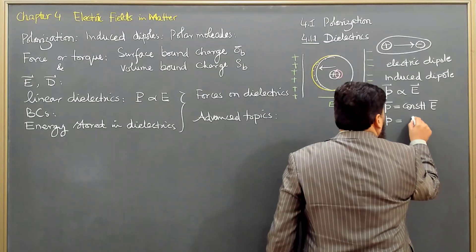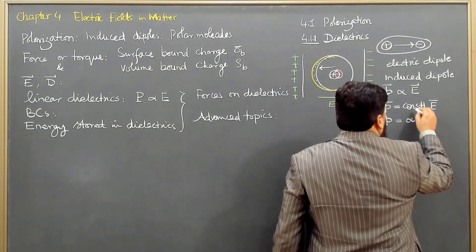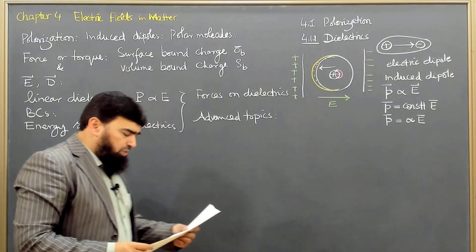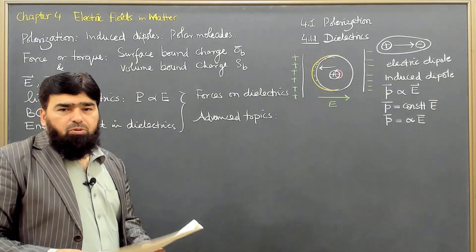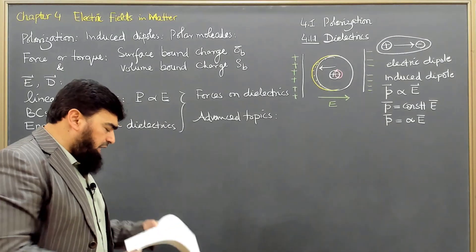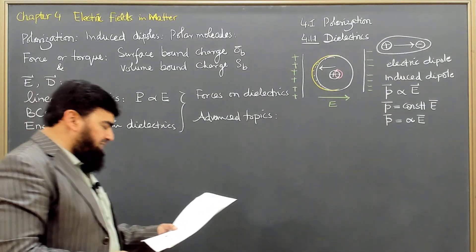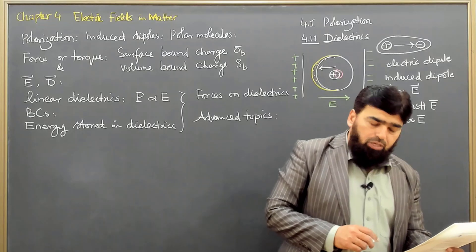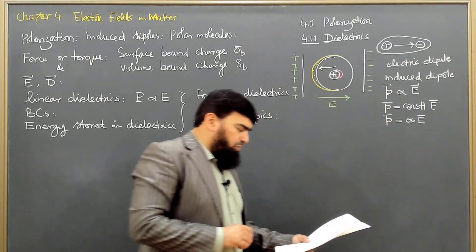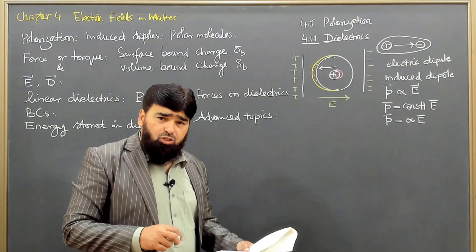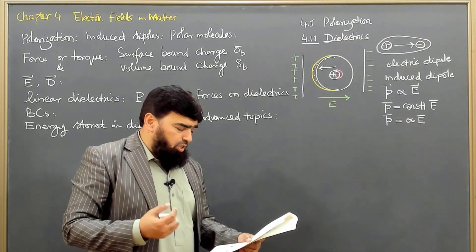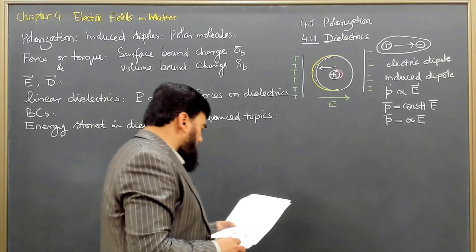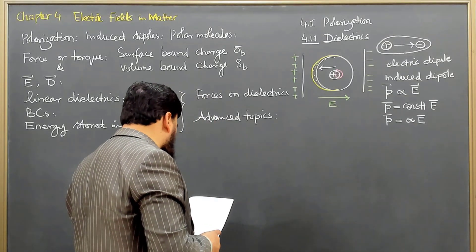We write p = αE, where this constant α is called atomic polarizability. The atomic polarizability of different materials is different, and Table 4.1 lists the elements with their atomic polarizabilities. The magnitude is very small — on the order of 10⁻³⁰ — and the units are meter cubed.